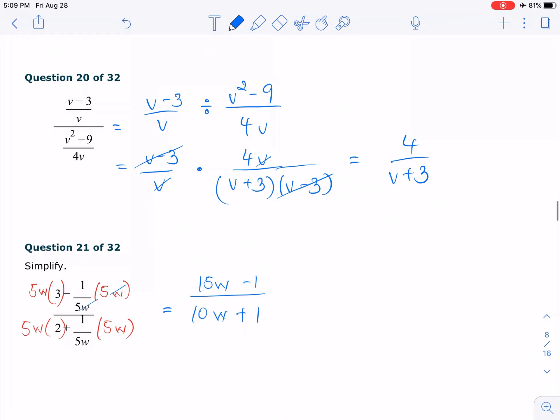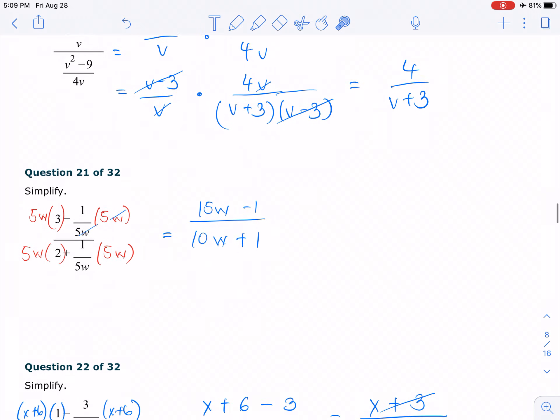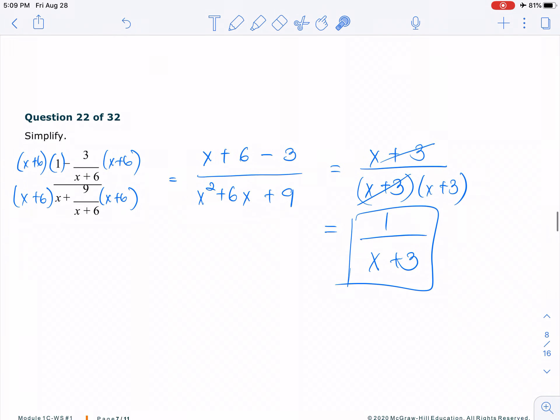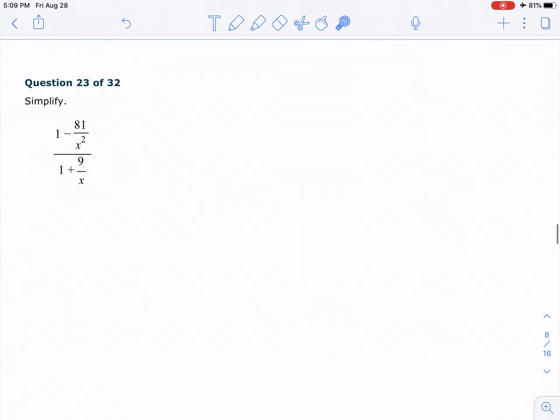So number 21, I see 4 terms. You see 4 terms. Every time you see 3 terms or more, it's best to multiply the LCD. Same thing over here. Same thing over here, number 22. So let's do number 23 together.